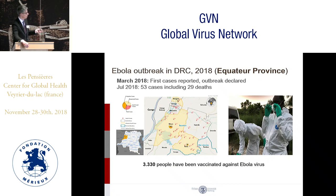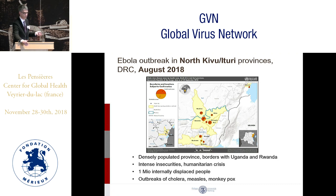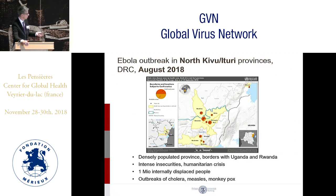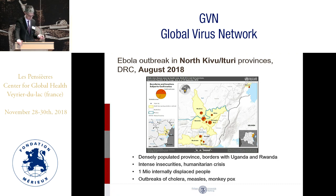When that outbreak was declared over in July, in August there was the next Ebola virus outbreak, which is still active. This also took place in the Democratic Republic of Congo, but in the eastern part — in provinces at the border with Uganda and Rwanda, called North Kivu and Ituri. Unfortunately, these are densely populated provinces. The situation is further complicated by a humanitarian crisis caused by decades of civil wars, intense insecurity, one million internally displaced persons, and concurrent outbreaks of cholera, measles, and monkeypox in the same region.